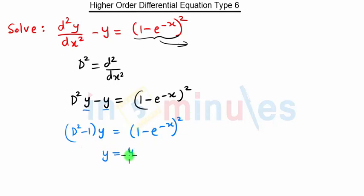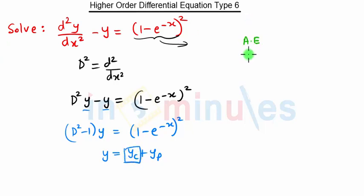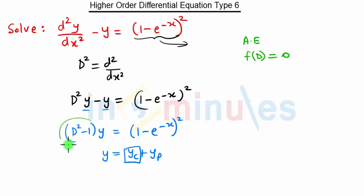The solution of this equation is given by y equal to yc plus yp. First we will concentrate on yc. To find yc, we need an auxiliary equation, and we know the auxiliary equation is f of D equal to 0. Here, f of D is D squared minus 1 equal to 0.